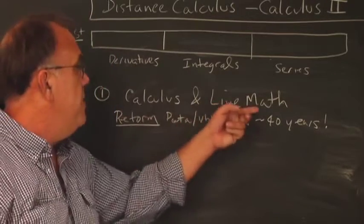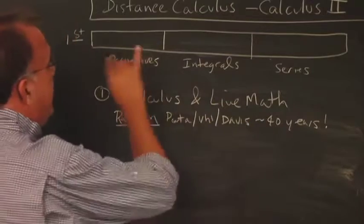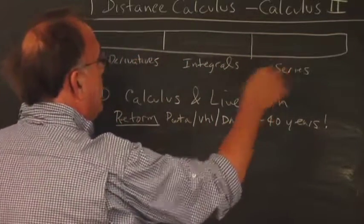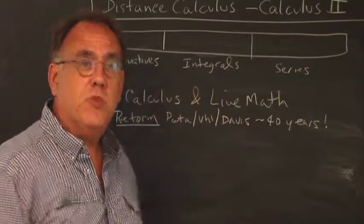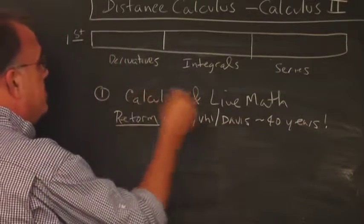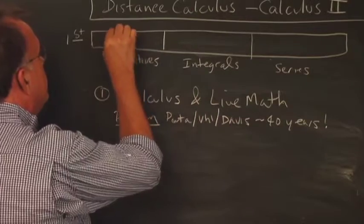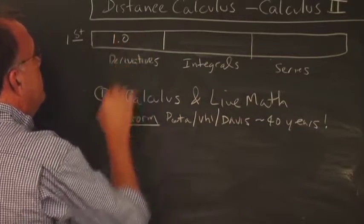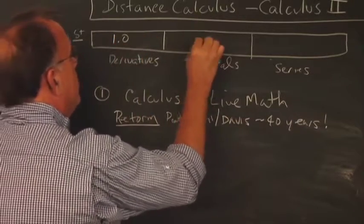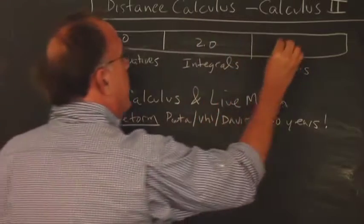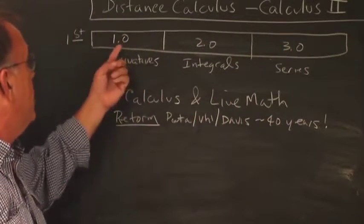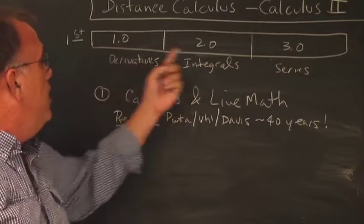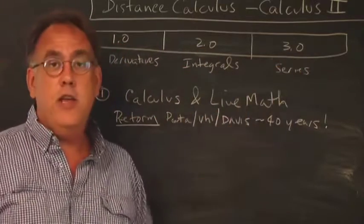The Calculus and Live Math curriculum actually has its books, and books is like in quotation marks because these things aren't really books, they are electronic books. So these are the books that are in 1.0, these are in 2.0, and then these are in 3.0. This is kind of the section, module area 1, area 2, and area 3.